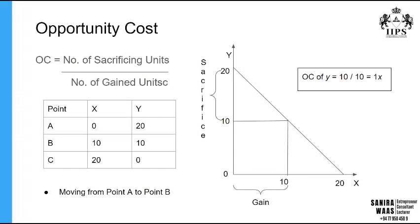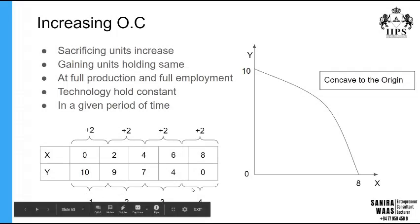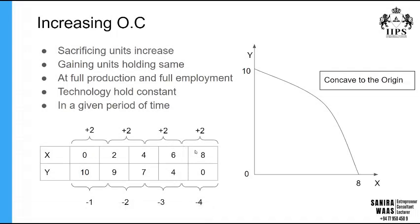The prime focus here is increasing opportunity cost and decreasing opportunity cost. Increasing opportunity cost means that the sacrificing units increase over time while the gaining units stay the same. You can see in the X-Y scenario you are gaining two units at each step, but the units you sacrifice from one point to another gradually increase — first one, then two, three, four. That is why it is called increasing opportunity cost. This holds under the assumptions of full production, full employment, constant technology, and is identified for a given period of time.